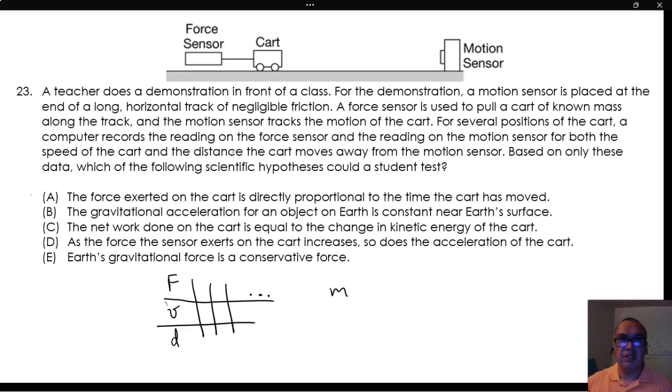Option B: The gravitational acceleration for an object on Earth is constant near Earth's surface. There is no measurement of any kind of acceleration, and even if we calculate one from the data collected, it is an acceleration directed horizontally. Therefore, we are not measuring any quantity related to gravitational acceleration. This is not a valid option either.